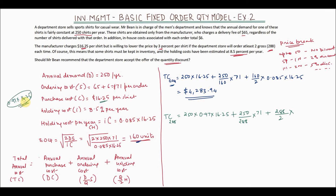Plus the annual holding cost: (288/2) × H, where H = i × c = 0.085 × 0.97 × 16.25. Upon calculation, this turns out to be $4,195.19.